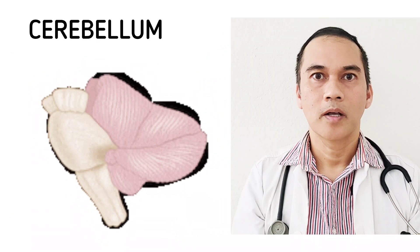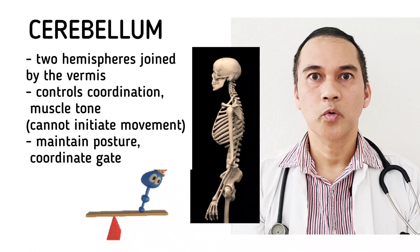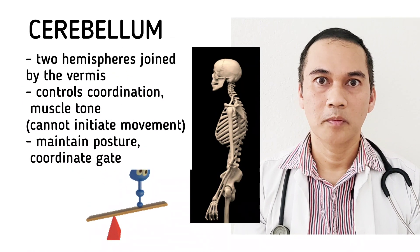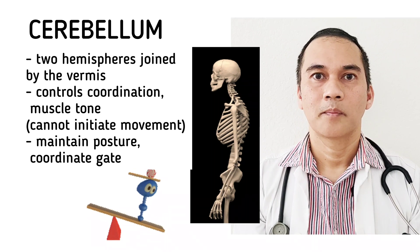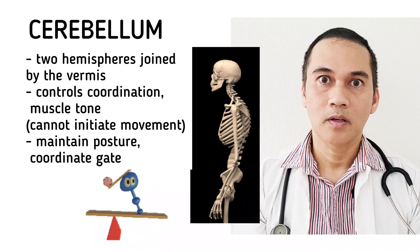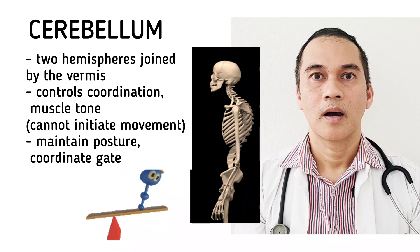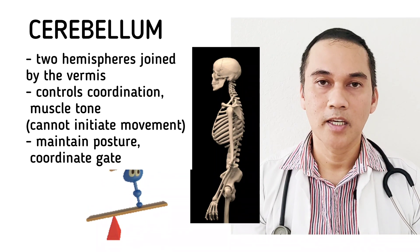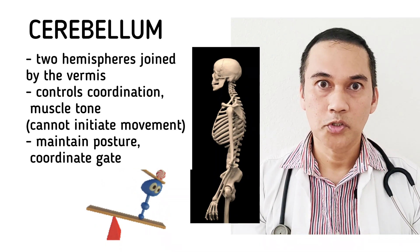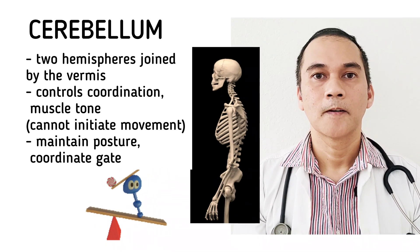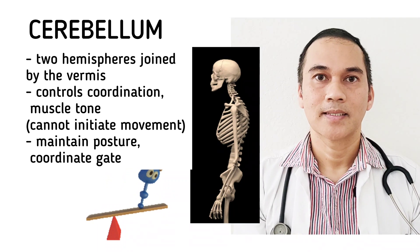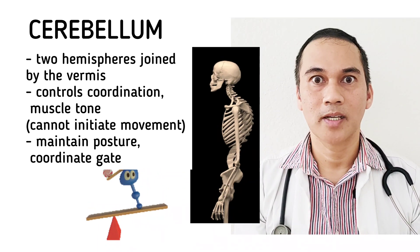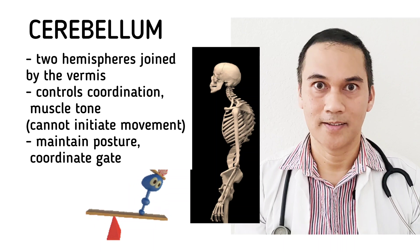Let's talk about the cerebellum. The cerebellum also has two cerebral hemispheres, and they are joined by the vermis. The primary functions of the cerebellum are coordination, gait, posture, and balance. However, the cerebellum cannot initiate movement.